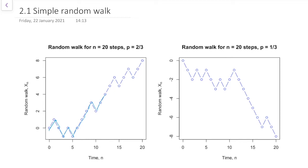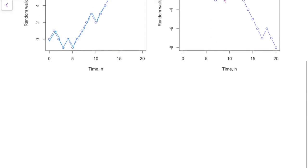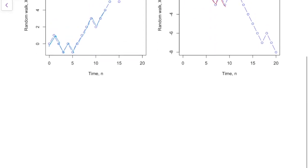Similarly, over on the right we have p equals one third, so q equals two thirds, so it goes down more often than it goes up. Here it goes down, down, down, up, down, up, down, up, down, up, down, up, down, up, down, etc. So how are we going to write down the definition of this in maths?